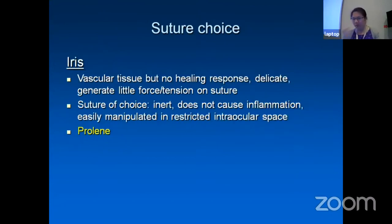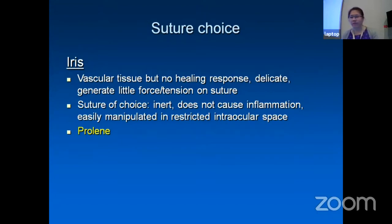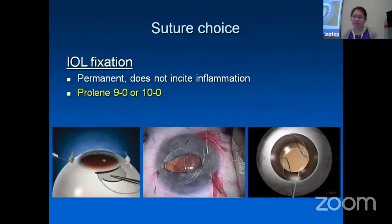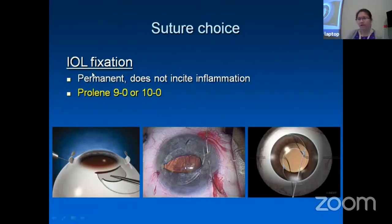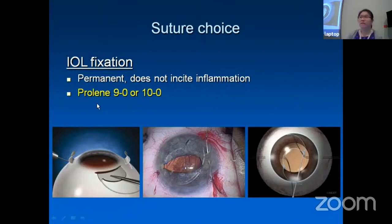For iris, it is vascular but has no healing response — it is delicate and generates little tension on the suture. Suture choices must be inert, not cause inflammation, and easy to manipulate in restricted intraocular spaces, so we normally use 10-0 Prolene. For IOL fixations, people now try to avoid sutured fixation, but those who still use sutures typically use 9-0 or 10-0 — permanent and not inciting inflammation. However, these may disintegrate in about 10 years.